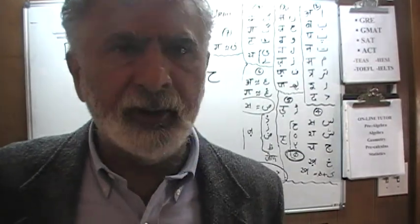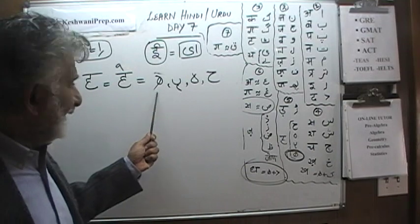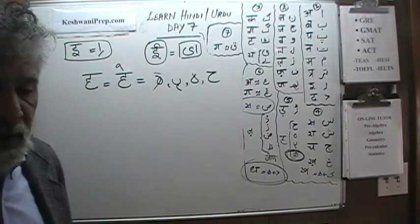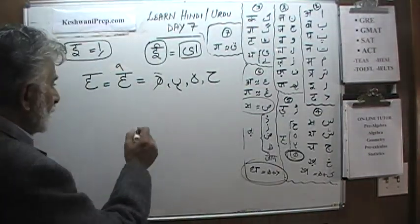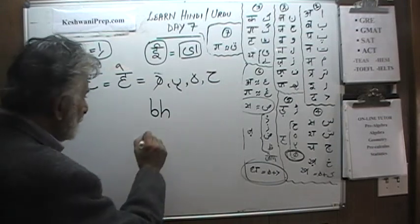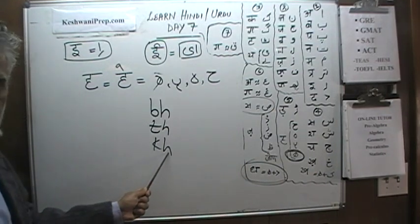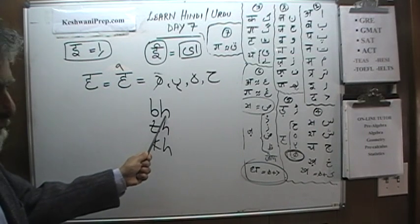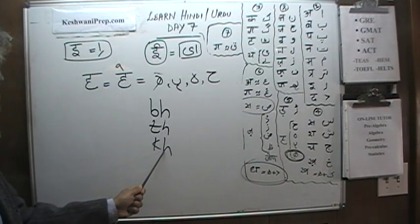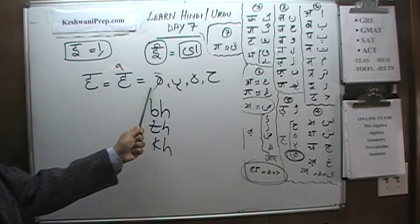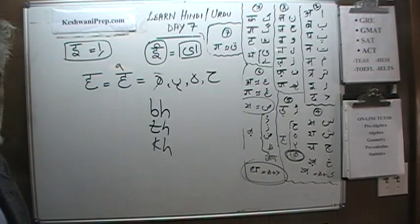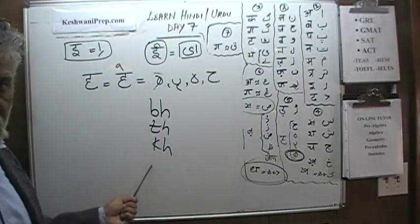The writer has to know which He to use in order for the spelling to be correct — just like learning English spelling. The last He is very special; it is called Do Chashmi Hai. Do Chashmi Hai is used to produce sounds like converting B into Bh, T into Th, K into Kh. We use this H just like in English, where you put an H next to a letter. In Urdu, we do not have unique letters for these sounds, unlike Hindi which does.